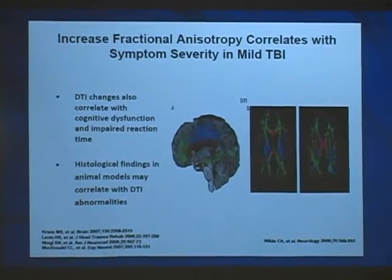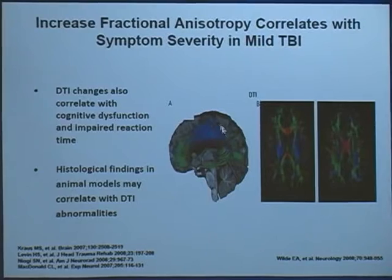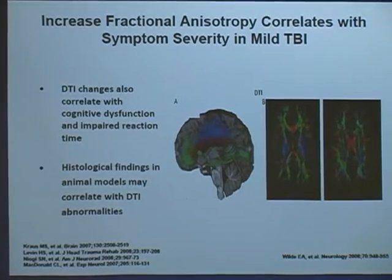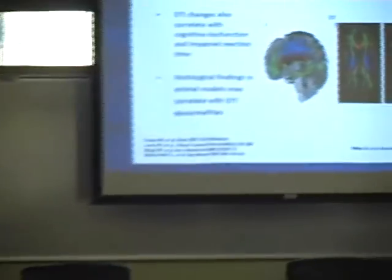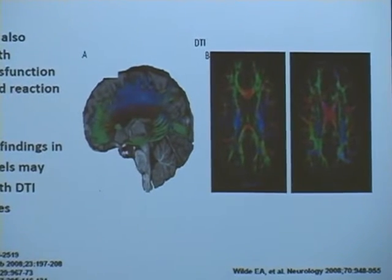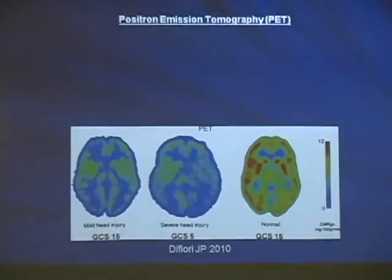Diffusion tensor imaging (DTI) looks at axoplasmic flow — the constant movement of nutrients to and from the end of an axon. This flow requires energy, so if the cell isn't working and lacks energy, axoplasmic flow shuts down. DTI can measure this, distinguishing normal from abnormal axoplasmic flow, and it correlates well with impaired cognition and symptoms — making it another potential future diagnostic test.